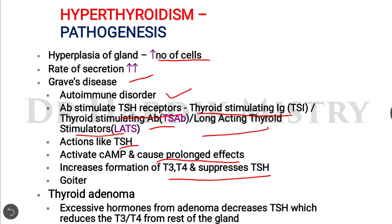Once T3 and T4 hormone production increases, there will be suppression of TSH from the anterior pituitary gland and development of goiter. These represent the pathogenesis of hyperthyroidism.